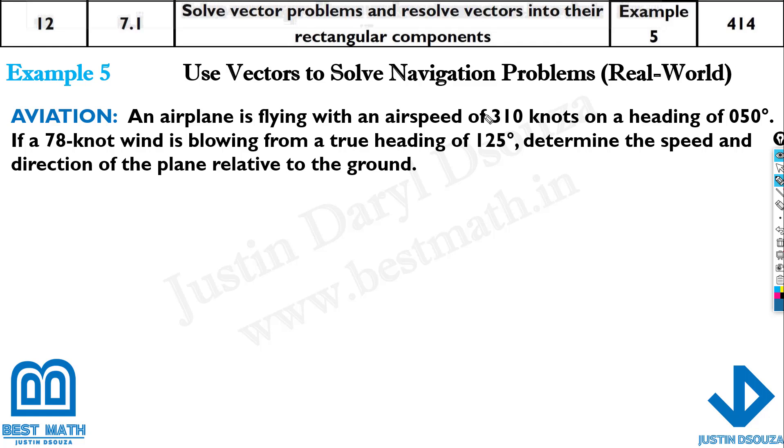An airplane is flying with an airspeed of 310 knots on a heading of 050 degrees. 050 means it is from the north. From the north here, 50 degrees. It's just more than 45 degrees, right? So that will be the plane. It's heading with 310 knots.